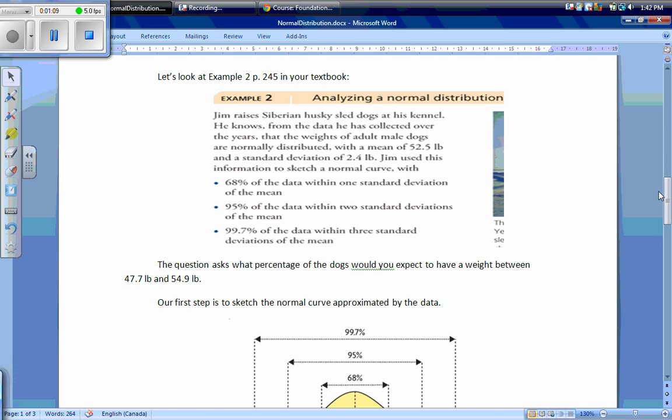Let's look at example 2 on page 245 in your textbook. Jim raised Siberian husky sled dogs at his kennel. He knows the weights of adult male dogs are normally distributed with a mean of 52.5 pounds and a standard deviation of 2.4 pounds. What percentage of the dogs would you expect to have a weight between 47.7 pounds and 54.9 pounds?